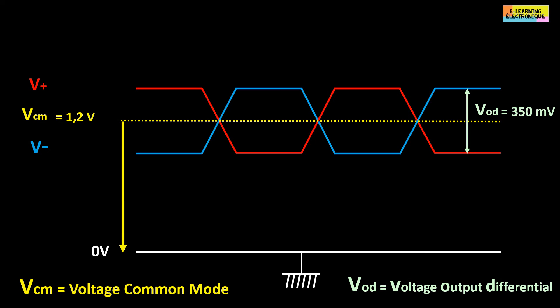Using now VCM as reference we obtain the following formulas: V+ equals VCM plus half VOD. This gives V+ equals 1.2 plus 0.175, which equals 1.375 volts. For the other voltage, V- equals VCM minus half VOD, so V- equals 1.2 minus 0.175, which gives 1.025 volts.